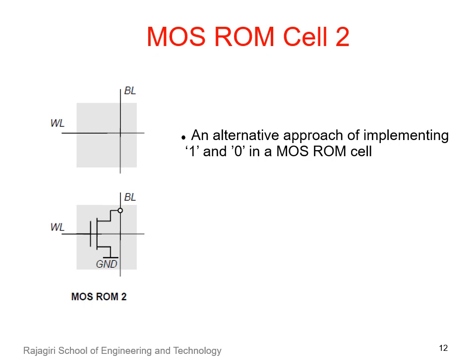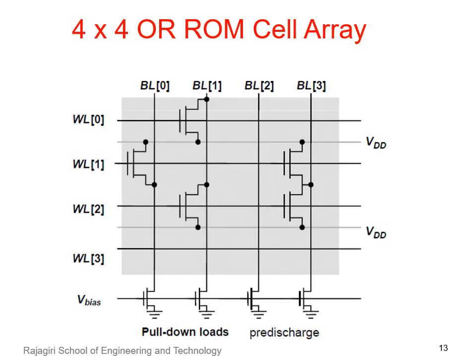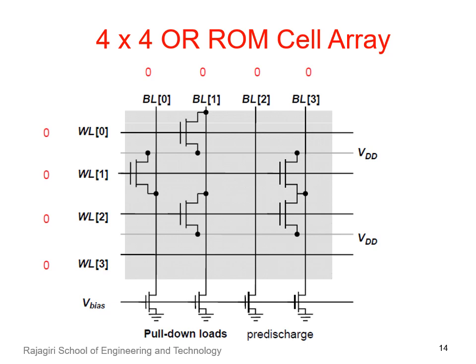This is yet another approach for implementing 1 and 0 in a MOS ROM cell. Here, the bit line is pulled down to ground when the transistor turns on with a high voltage on the word line. A ROM cell array for storing 4 words, each consisting of 4 bits, is shown. Here, NMOS transistors in each cell have to be provided with extra VDD contact. This incurs a larger area overhead. The overhead of supply lines is reduced by sharing them between neighboring cells as shown in the figure. Each bit line is connected to ground by using pull-down loads, so the default value of the bit line will be 0.